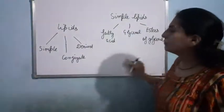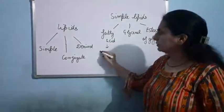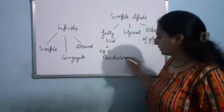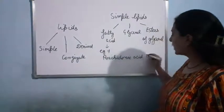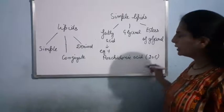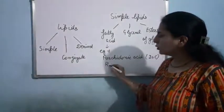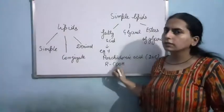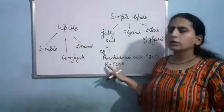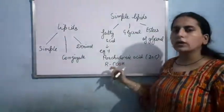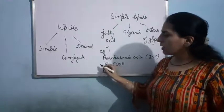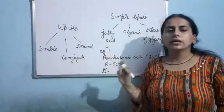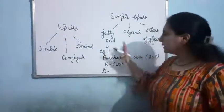The second example of a fatty acid is arachidonic acid. In arachidonic acid we are having 20 carbons in total. The basic formula is RCOOH, so one carbon is in the COOH group. For the R group, 19 carbons are left. You have to draw 19 carbons and then satisfy the valency with H groups.